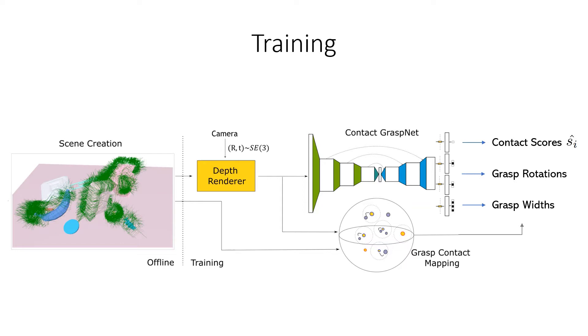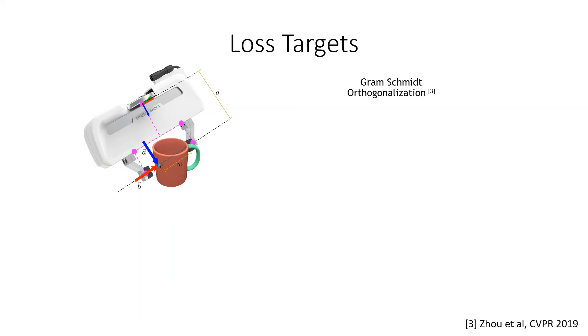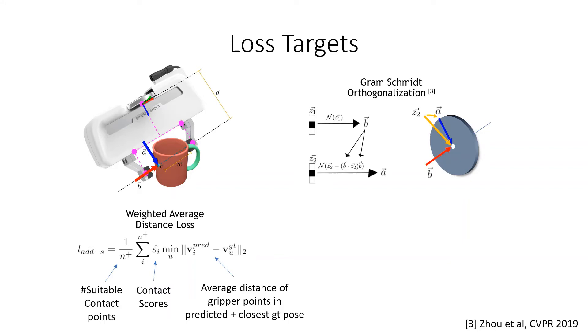An asymmetric PointNet++ with several heads then predicts pointwise contact scores and our 4DOF grasp representation. We perform a Gram-Schmidt orthogonalization on the network outputs to predict perpendicular grasp approach directions A and grasp baseline directions B. Instead of directly supervising them, we compute an average distance of gripper points, shown in pink, in the predicted and closest ground truth pose, weighted by the contact scores. Thereby, multiple approach directions lead to a low loss and contact confidence can only increase for good grasp pose predictions.